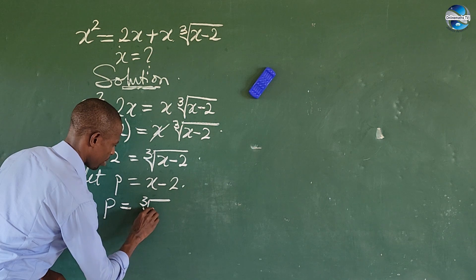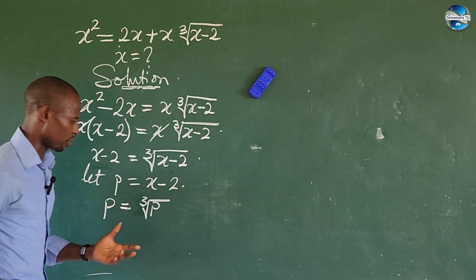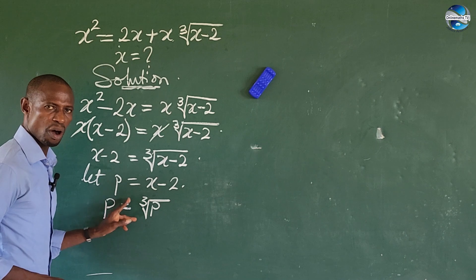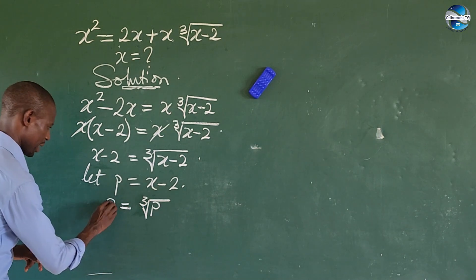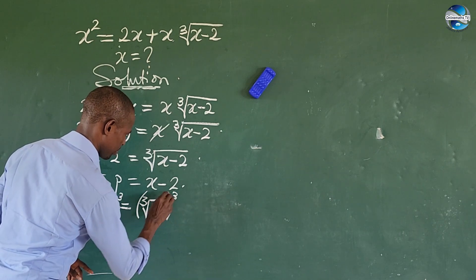We can rewrite this, or straightforward, let's take the cube of both sides to eliminate this guy here. I put this in bracket to the power of 3, put this in bracket to the power of 3.